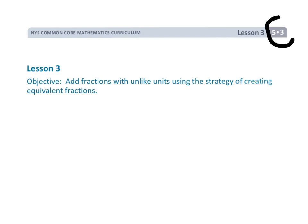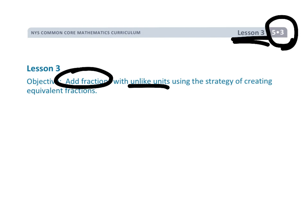This is 5th grade module 3, lesson 3, and we're going to be adding fractions with unlike denominators. We're going to use the area model as our strategy for finding our equivalent fractions.